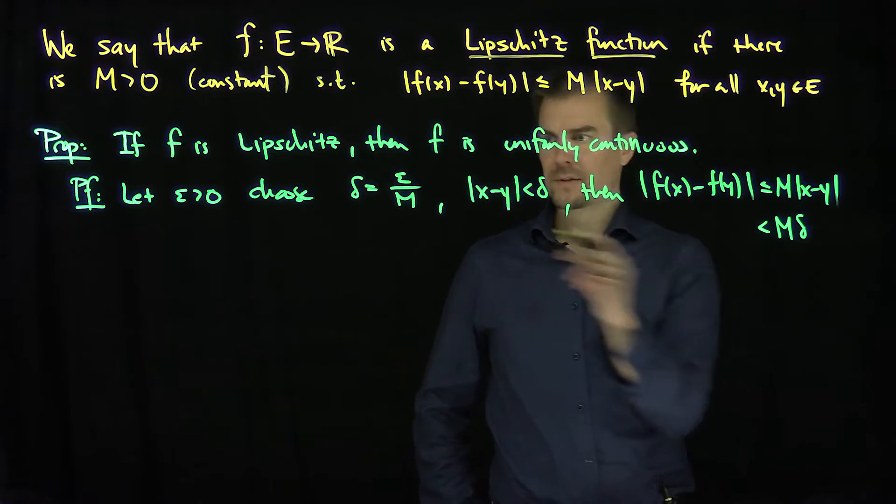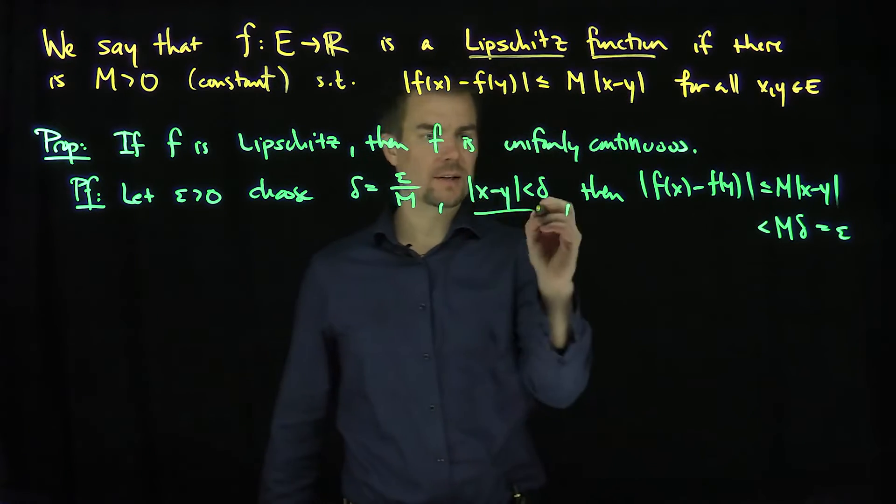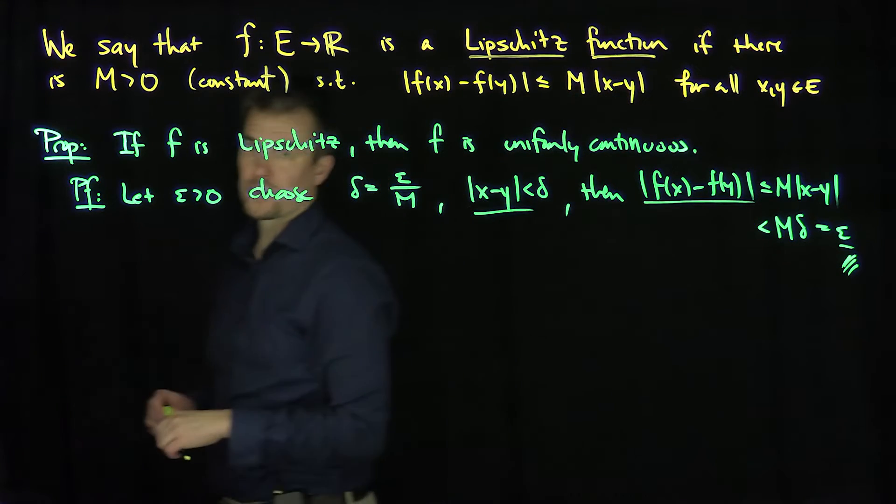And then that's going to be less than M delta, but delta is epsilon over M, so this is just epsilon. So that says if |x - y| is less than delta, then |f(x) - f(y)| is less than epsilon, and that proves the function is uniformly continuous.